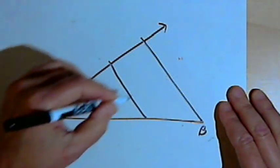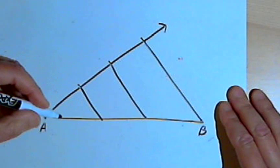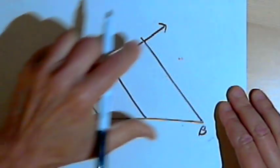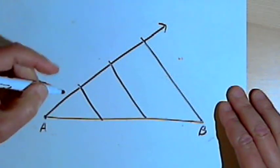So what I've got here is three parallel lines. The ray and line segment AB are transversals that are cut by those three lines.